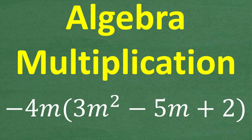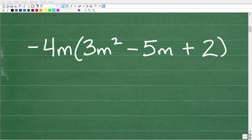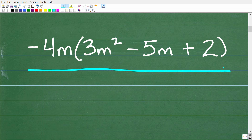So what we're talking about here is a problem that a student would see in a course like pre-algebra, certainly Algebra 1. We're trying to find the product of negative 4m and 3m squared minus 5m plus 2. So I think a really good place to start with this problem is to review some really important algebra words and concepts.